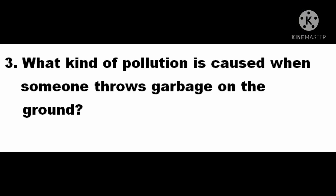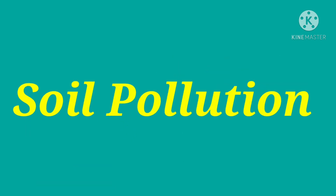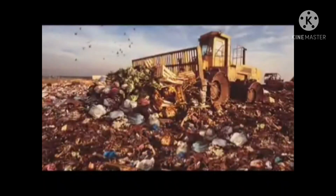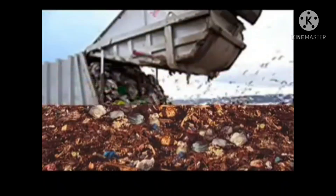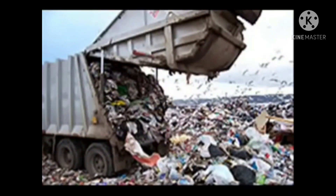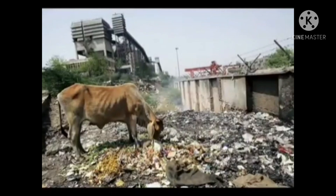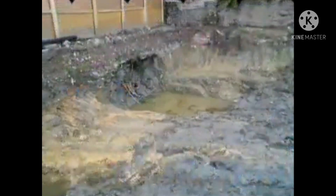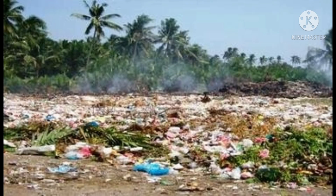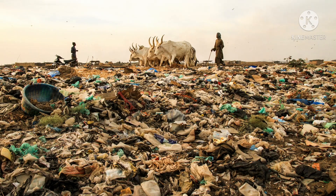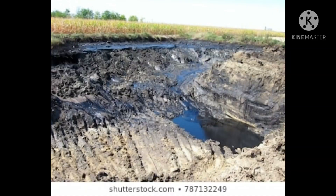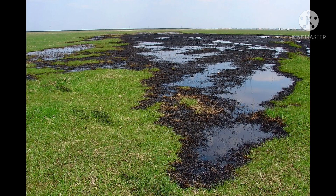Question 3. What kind of pollution is caused when someone throws garbage on the ground? The correct answer is soil pollution. The garbage that we throw away in our homes, and waste produced at giant factories — the chemicals from this garbage can contaminate the soil and eventually the ground water we need for drinking.